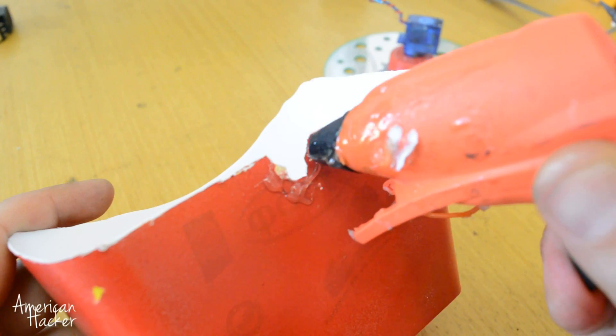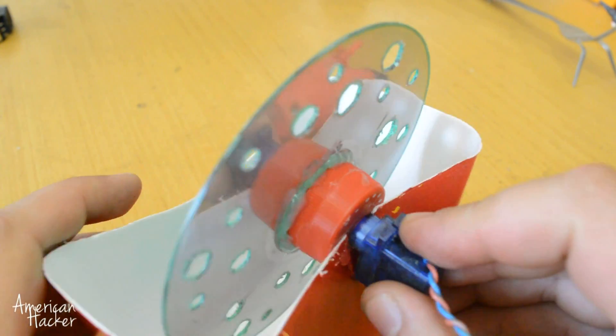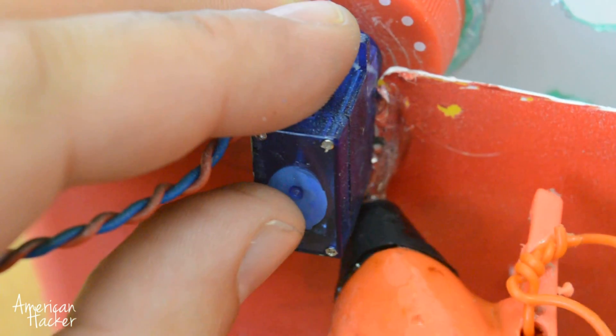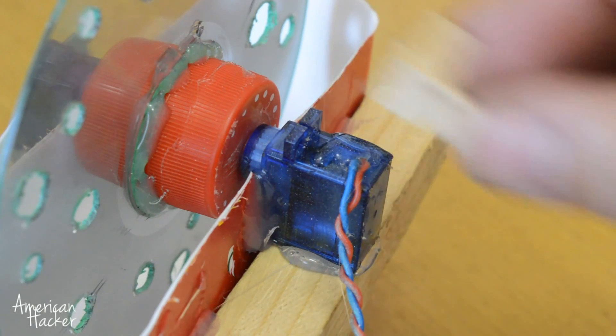Now I'm going to glue the servo motor with wheel onto the plastic container. Secure with extra hot glue and above the motor we're going to glue the 5V DC fan.